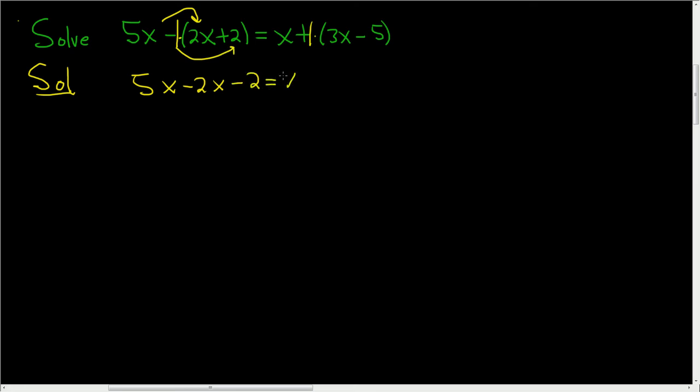On the right hand side we still have the x and then 1 times 3x is 3x and then we have a minus 5 here.